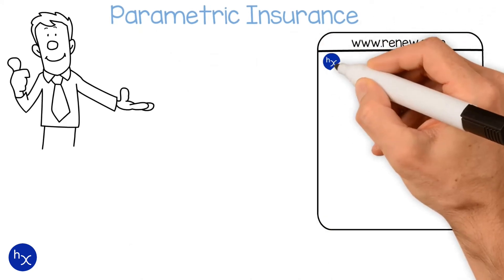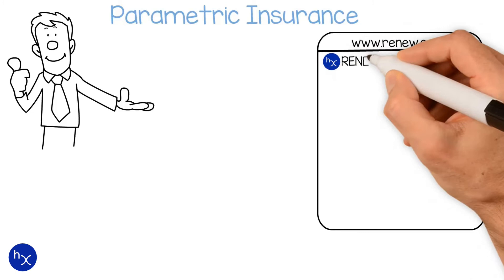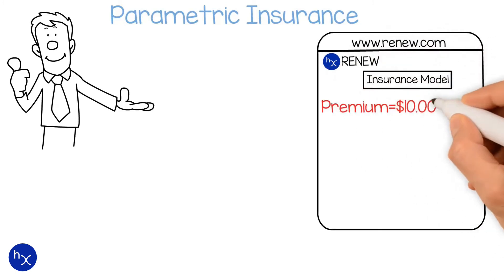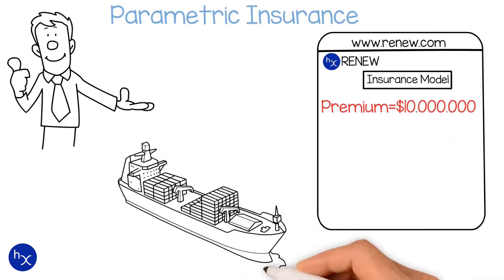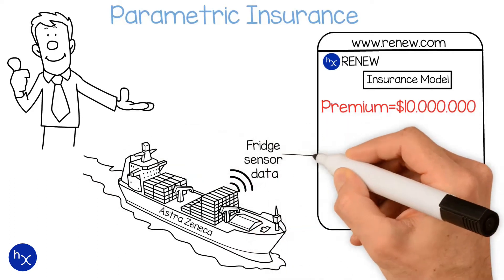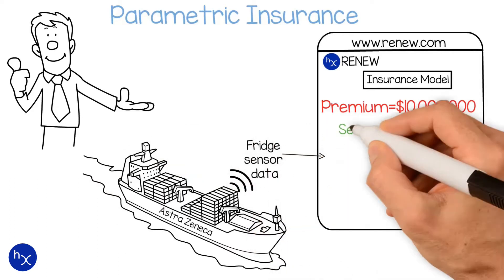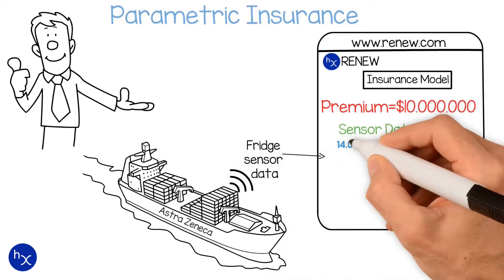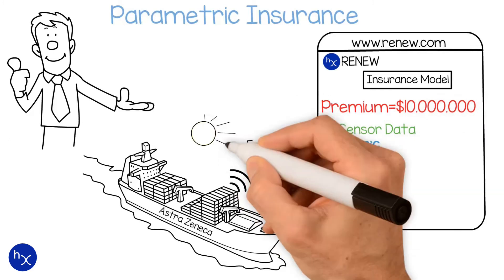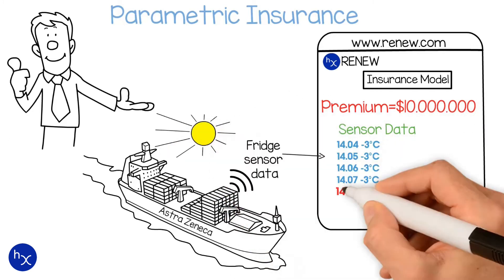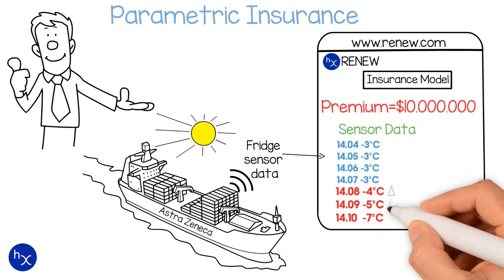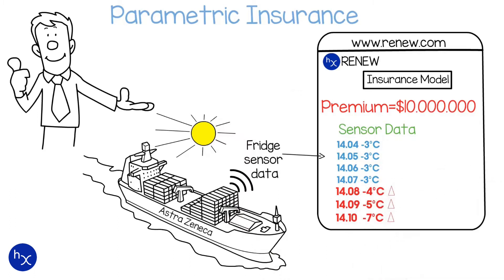We make a cargo model in Renew. We can use Renew's headless APIs to communicate with a temperature sensor located in our vacuum container onboard the ship. This sensor relays the current temperature of the vaccines to our model. In the model itself, we can dictate acceptable temperature ranges. If the cooling unit in the shipping container breaks, the sensor will begin to relay higher temperatures to our model, eventually exceeding our acceptable temperature limits.